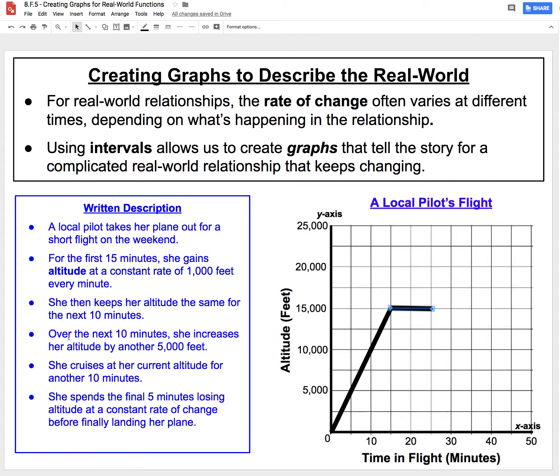The next bullet point tells us, over the next 10 minutes, she increases her altitude by another 5,000 feet. We're going to return to the end here where she was staying constant, and now she goes up for 10 minutes, from 25 to 35 minutes. From 15,000, add 5,000, we should be up at 20,000 feet at the end. So for these 10 minutes, she's gaining altitude again, all the way up to 20,000 feet.